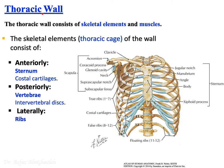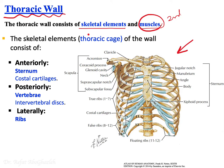When you say thoracic wall, you are indicating two parts: skeletal elements and muscles. What you see in this figure is the skeletal element of the thoracic wall; the muscles will be covered in the second part of the lecture. The skeletal element of the thoracic wall is called the thoracic cage.